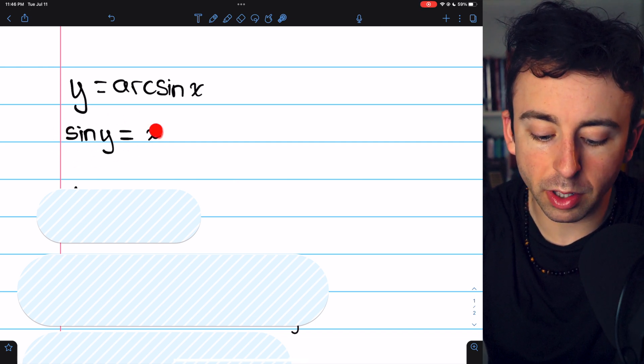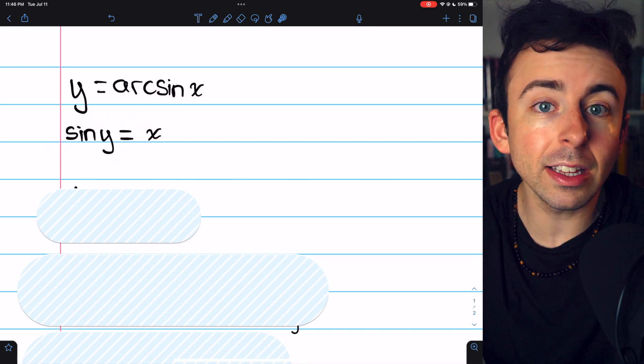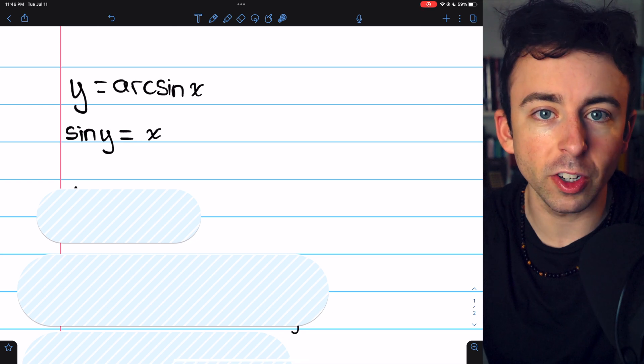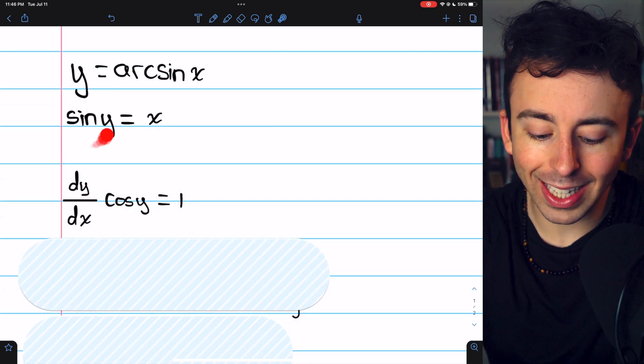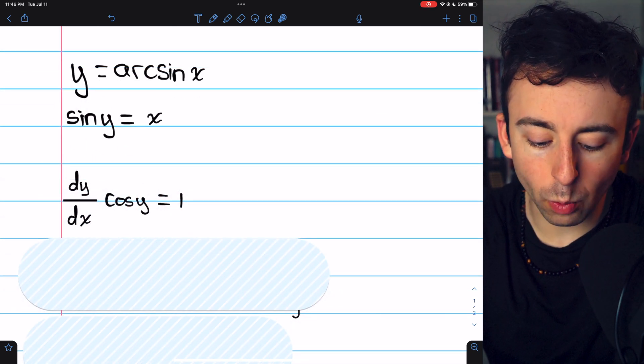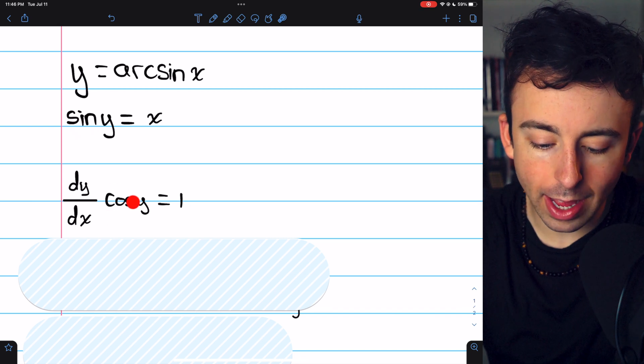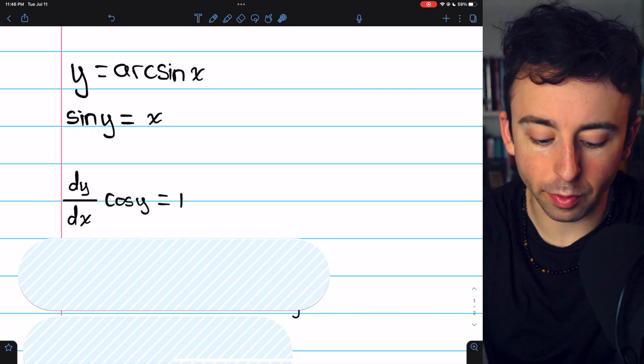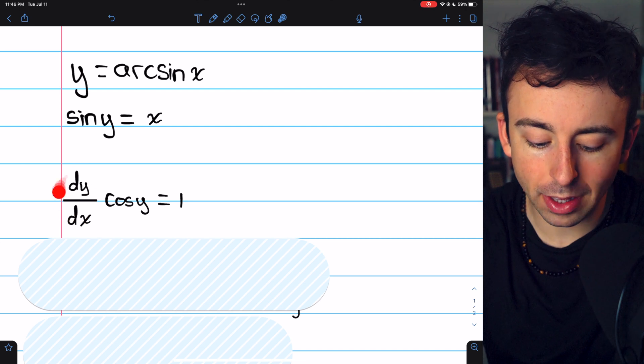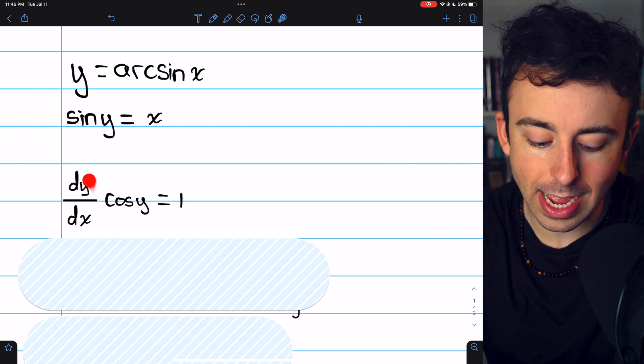We know the derivatives of everything in this equation, so we can start to use implicit differentiation. Taking the derivative on the left, the derivative of sin(y) is cos(y), but then we need to multiply by the derivative of y by the chain rule, and the derivative of y is dy/dx.